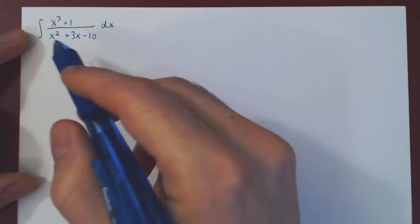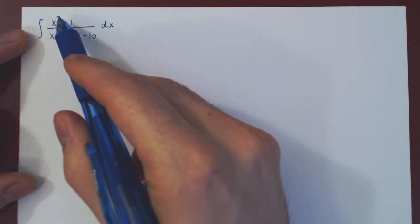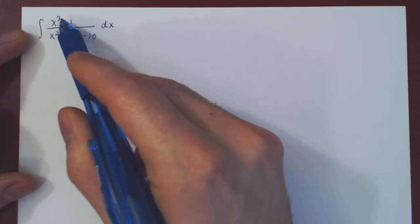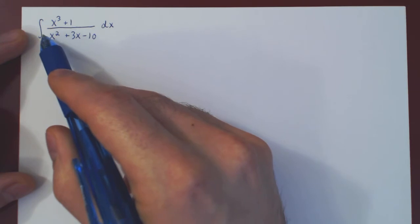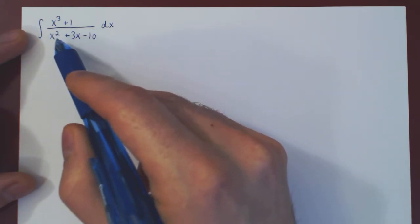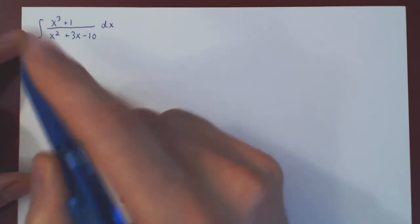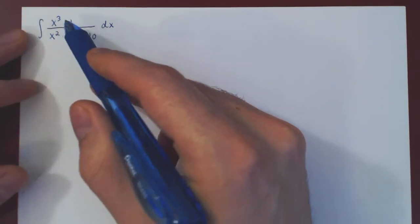The first step is to consider the degrees of both polynomials. On the numerator we have a degree 3 polynomial, on the denominator we have a degree 2 polynomial. As 3 is greater than 2, we must first perform long division.